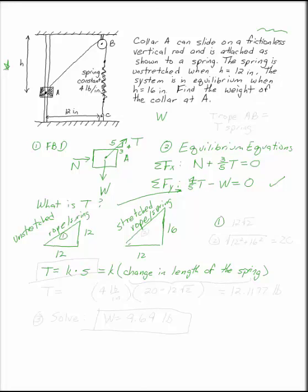This hypotenuse here, by the Pythagorean theorem, has length 12 square root of 2. The hypotenuse in the second case, where the rope has not stretched, but the spring has, will be the square root of 12 squared plus 16 squared, which is 20. So the change in the length of the spring is 20 minus 12 square root of 2.